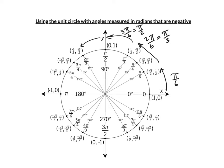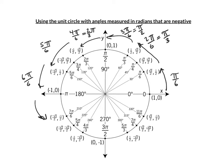Right here is 4 pi over 6, which reduces to 2 pi over 3. And I can keep going around another 30 degrees — that's 5 pi over 6. And then another 30 is 6 pi over 6. And another 30 is 7 pi over 6.